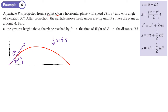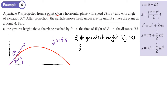First, find the greatest height. Let's put in our acceleration due to gravity as 9.8 m/s². At the greatest height — it might be worth writing this down in the exam — the vertical velocity Vy equals zero.